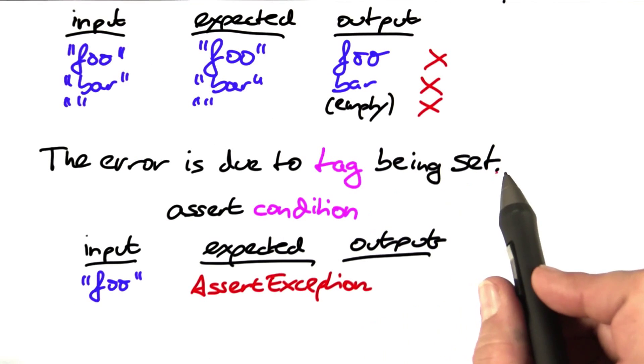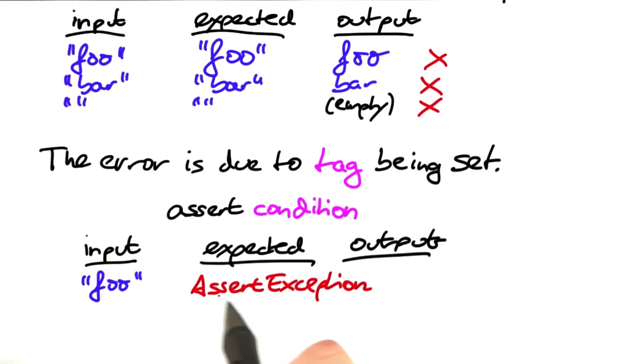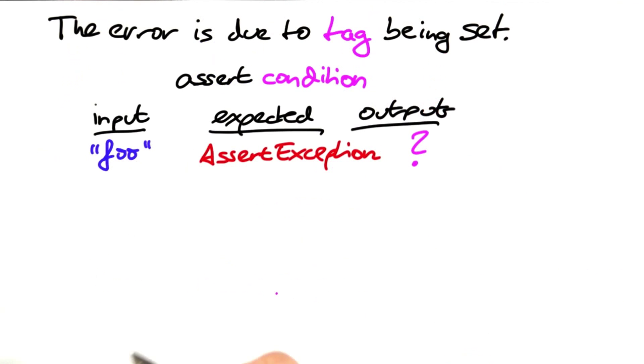So in order to confirm the hypothesis, we would expect an assert exception. What is the output really?